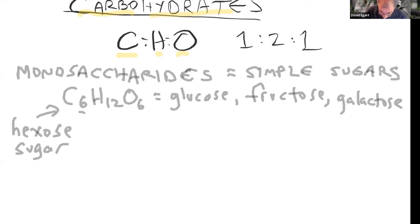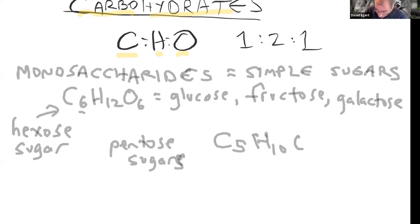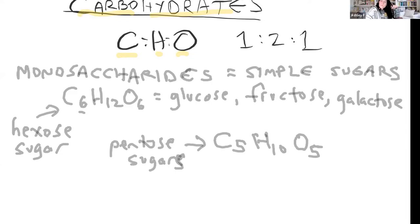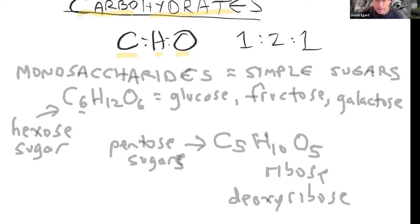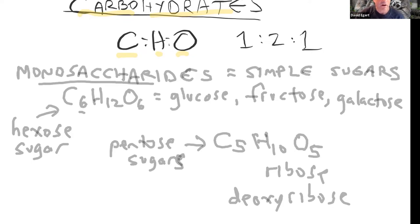There are also pentose sugars — C₅H₁₀O₅ — same ratio but with 5 carbons instead of 6. A classic example of a pentose sugar that's super important in your body is ribose, and deoxyribose. Deoxyribose is in the backbone of DNA; ribose is in the backbone of RNA. These are pentose sugars and we're going to see a lot of them.